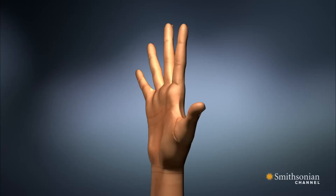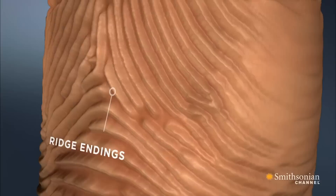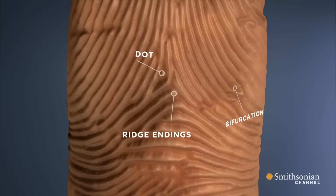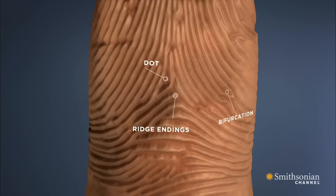You look at the individual points — the ending ridges, the splitting ridges, the dots that appear. Ridge endings are places where the ridges start and stop as they flow through the pattern. In other places, a ridge will split in two, also known as a bifurcation. A dot is a ridge that is as long as it is wide. The unique arrangement of these ridge characteristics clearly distinguishes one print from another.